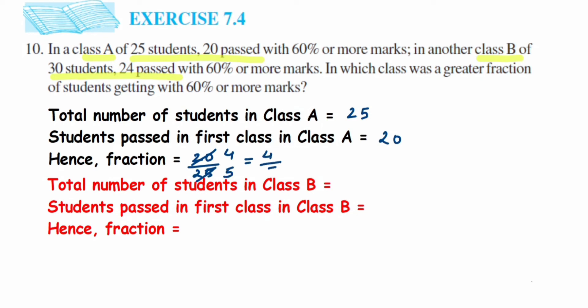Now I'm going to do the same thing for Class B. In Class B, total students are 30, and out of this 30 students, 24 passed with 60% or more marks. So total number of students in Class B will be equal to 30, and how many passed? It will be 24. So the fraction will become 24 upon 30.